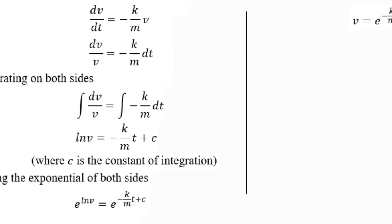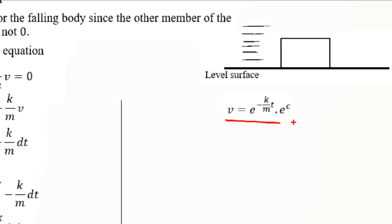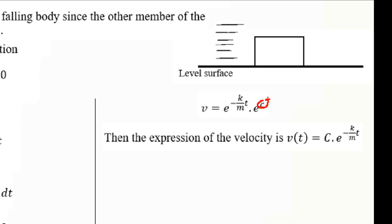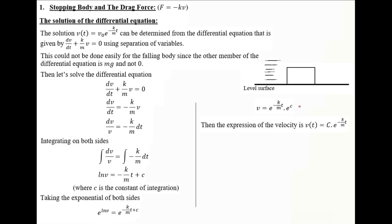Using the property e to the A plus B equals e to the A times e to the B, we separate the expression. Since C is a constant, e to the power C is also a constant, which we rename as C. So the velocity is expressed as C times the decaying exponential factor. To complete the solution, we find C using initial conditions: at T equals 0, V equals V0, which gives e to the power 0 equals 1, so C equals V0.